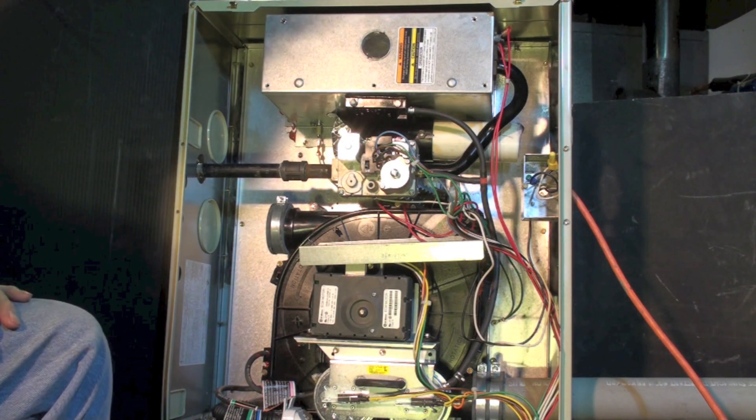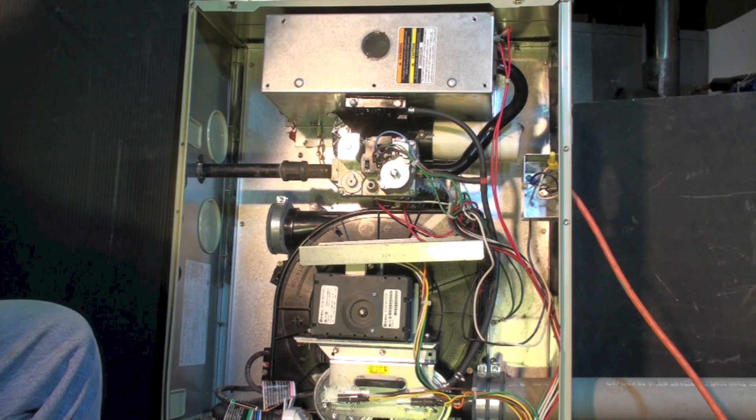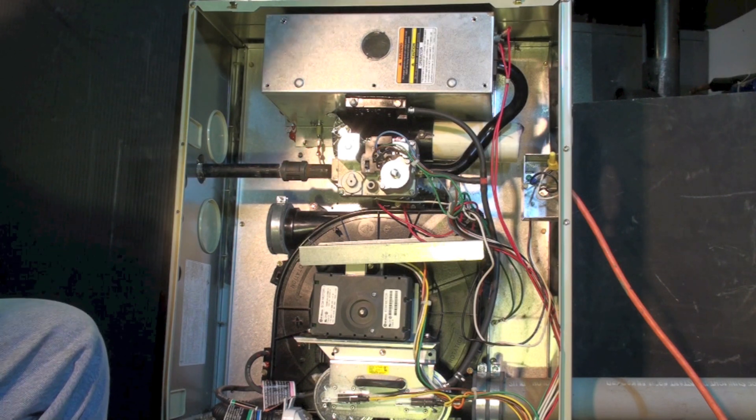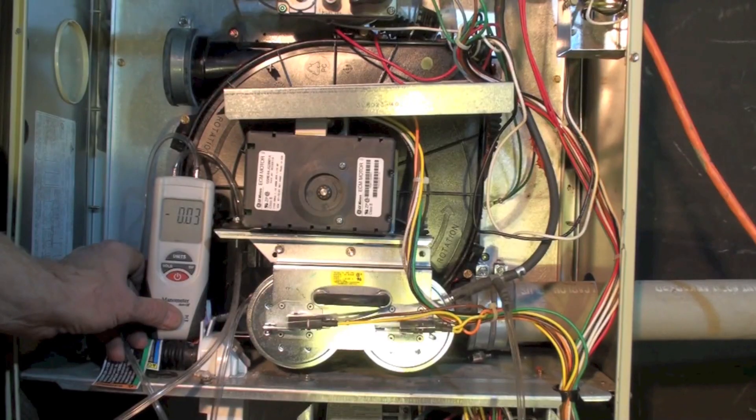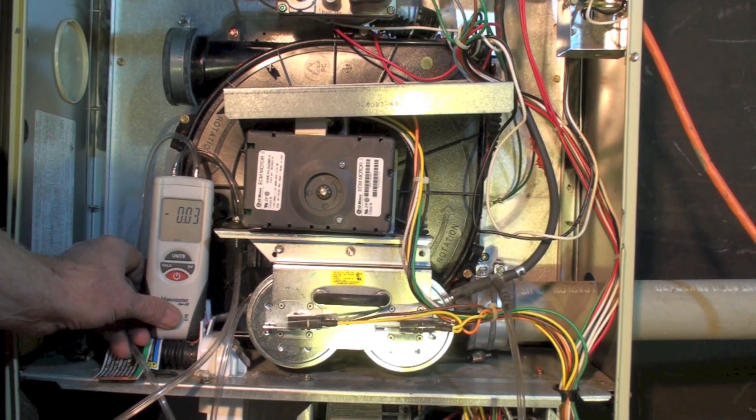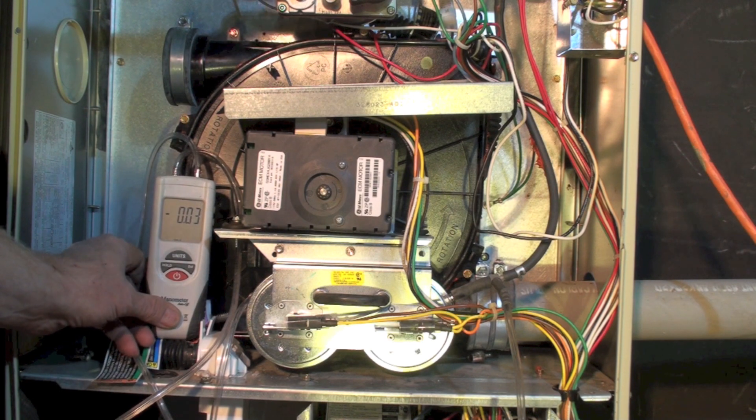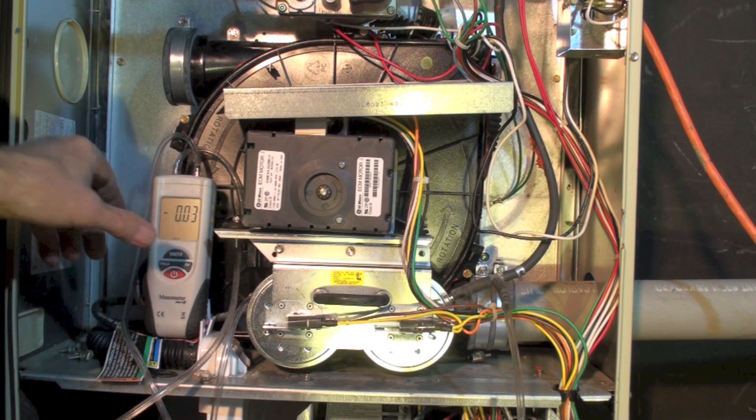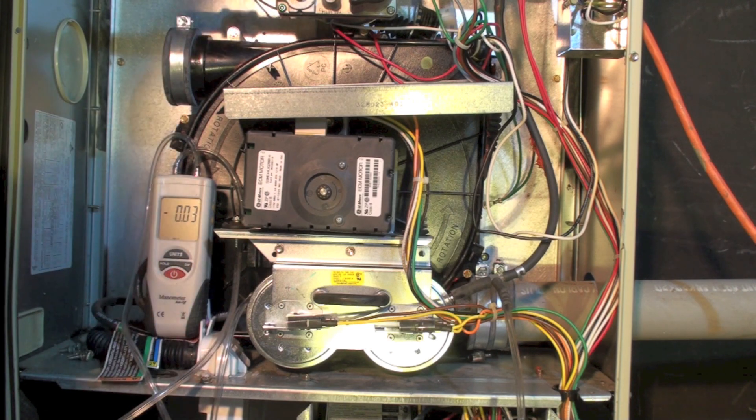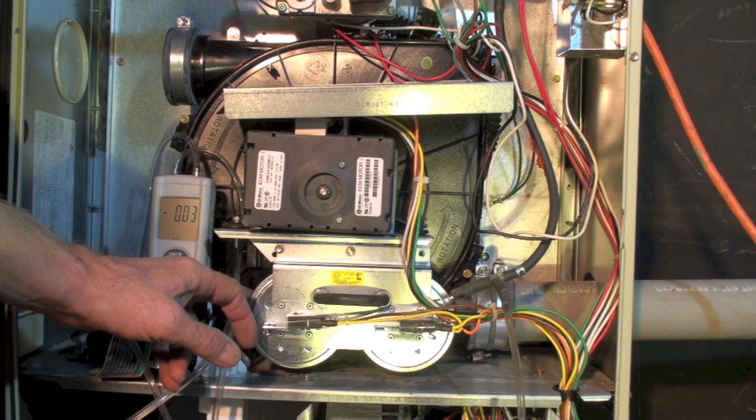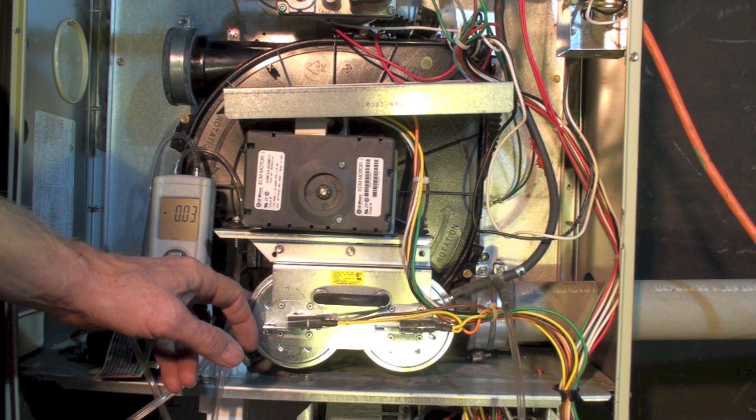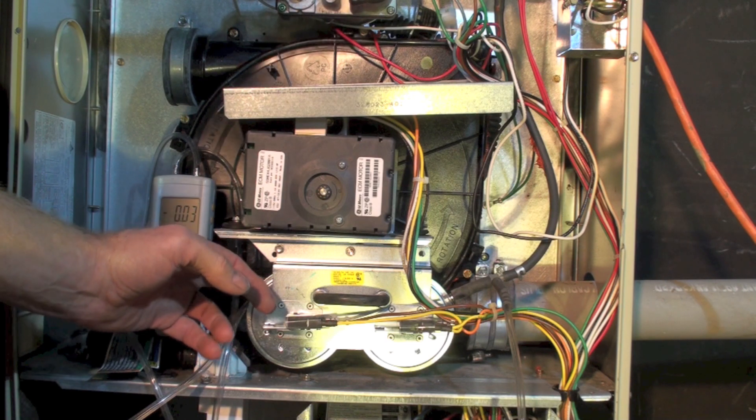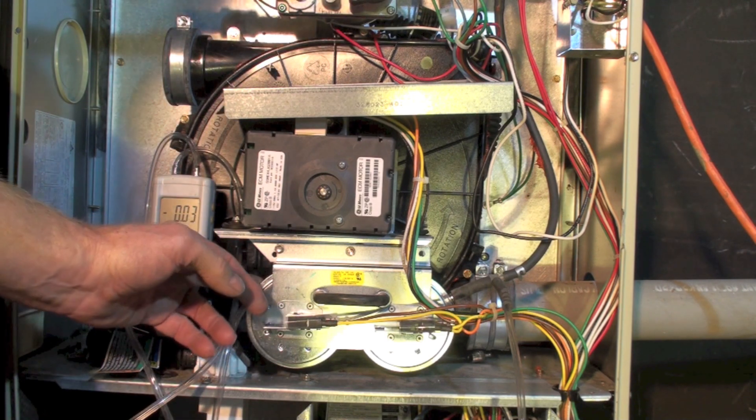Let's look at what happens with the pressure switches when this thing cycles on. I have a manometer on here and there's two sides on this manometer. One is tapped into the tap from the back of the pressure switch that goes to the back of the inducer.